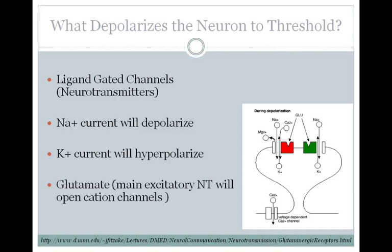Glutamate is the main excitatory neurotransmitter in the central nervous system. It opens cation channels that predominantly allow sodium to flow in, which then depolarizes the neuron and brings it to threshold, so you get those voltage-gated channels to open and you get your all-or-none action potential. This concludes our action potential lecture. Remember, you should be able to do the three things we talked about at the beginning of the video, and you should be able to answer all the questions on the online test.